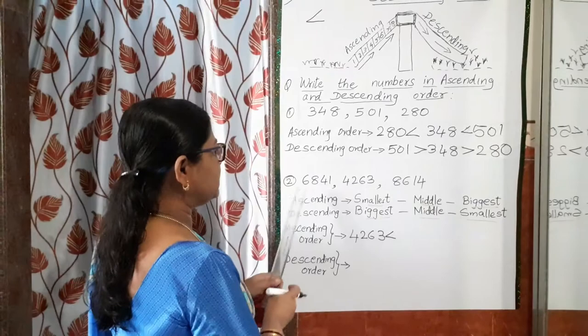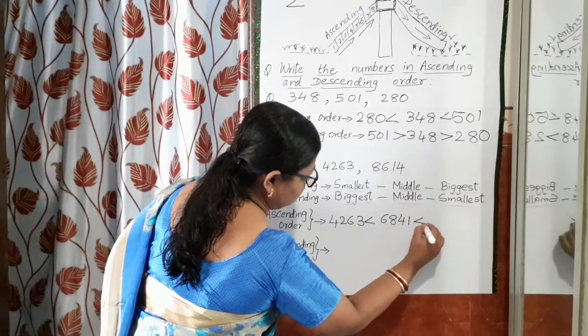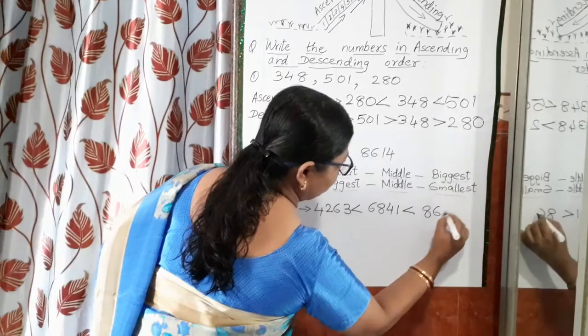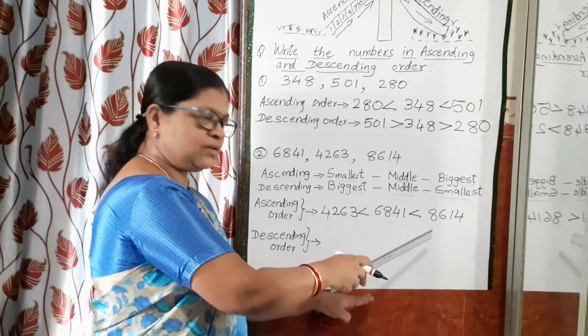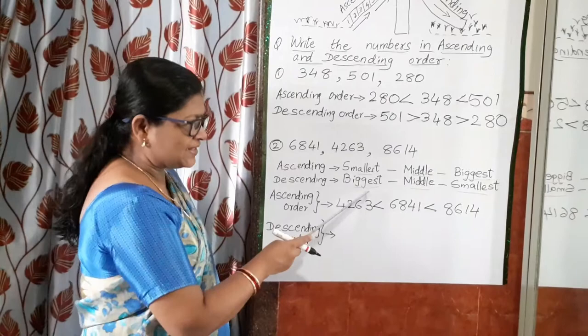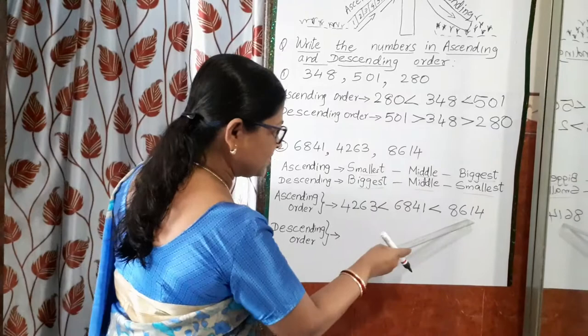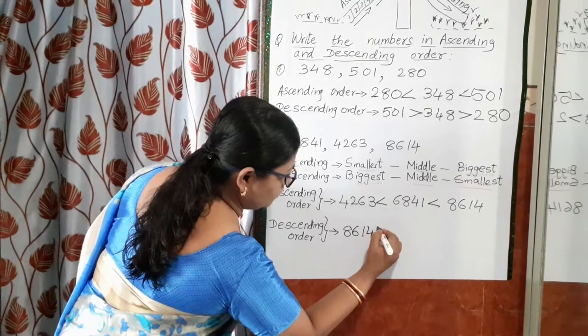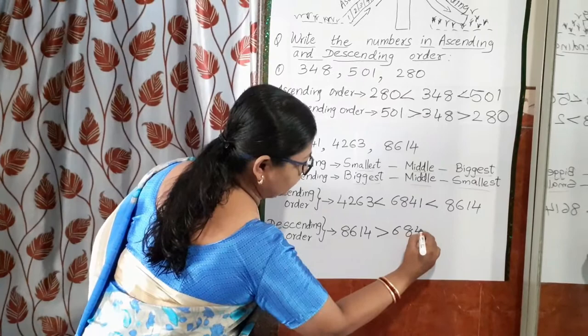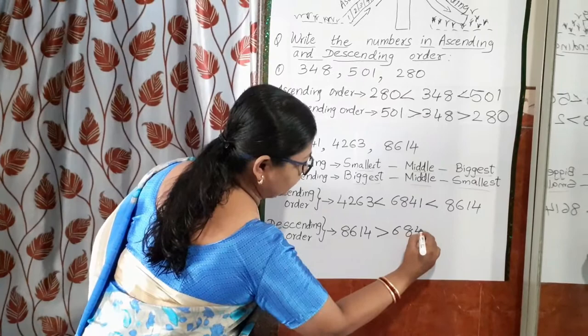The next middle number is 6841 — so 4263 is smaller than 6841, and then the last is 8640. So this is written in ascending order. Once we know the ascending order, it is very easy to write the descending order. In descending order, the biggest number comes first, then the middle number, then the smallest. So 8640 is bigger than 6841, and 6841 is bigger than 4263.